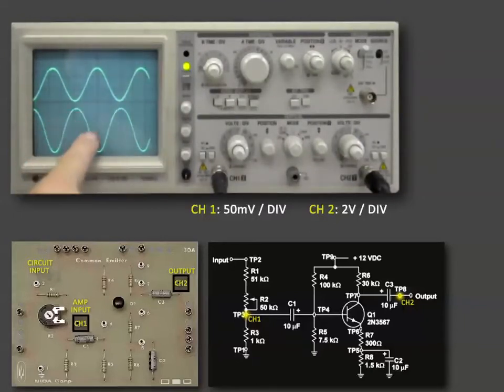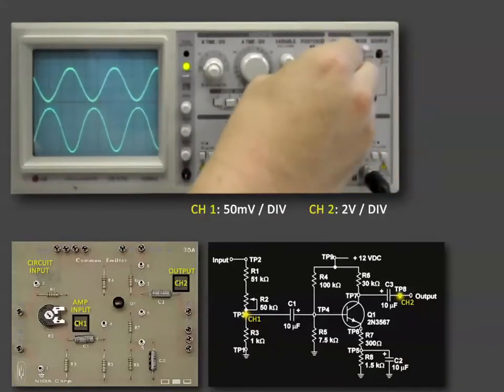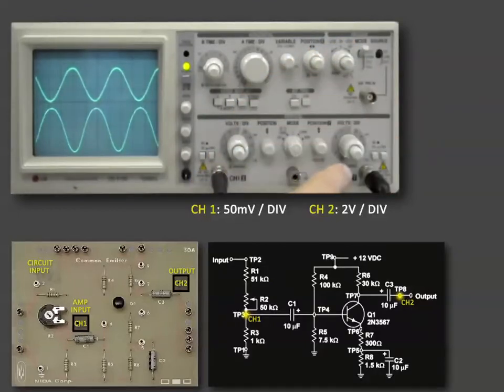And on channel two, which is the output, it's down here. I need to move, I need to center it again to get the peak-to-peak voltage. Channel two is on two volts per division. So we have one, two, three, point two, four. So three point four times two is six point eight volts peak-to-peak.